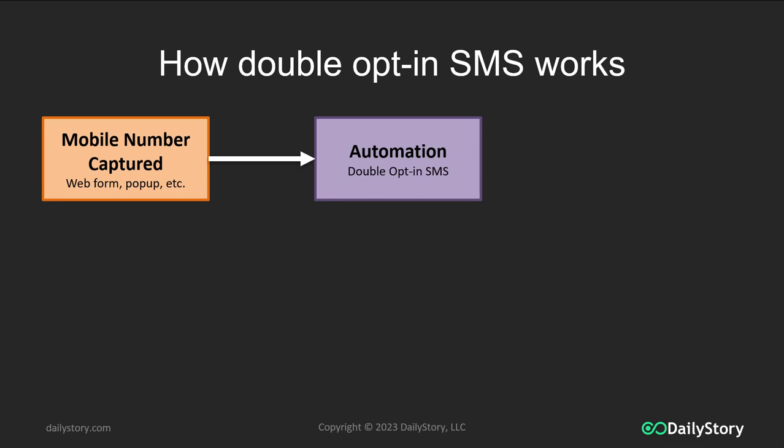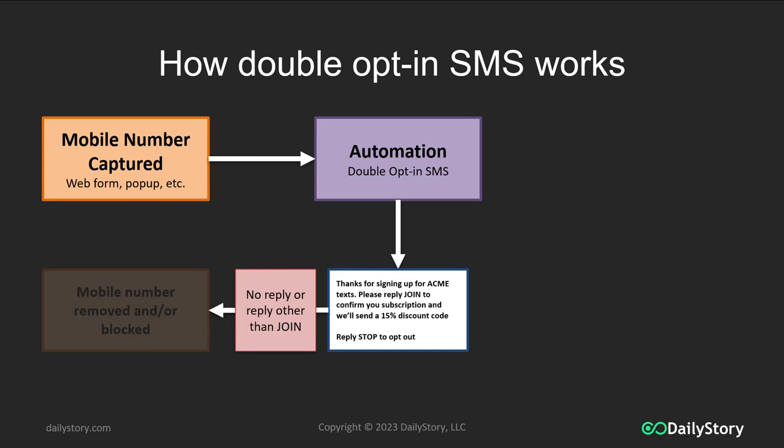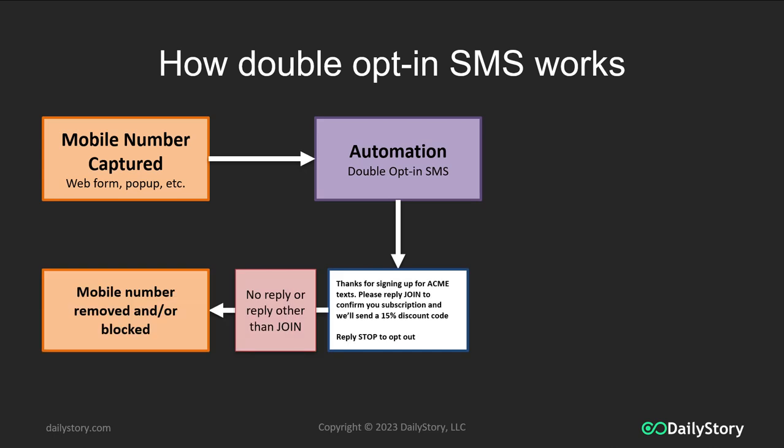What's going to happen is that number comes into your system. The automation runs — such as an automation in Daily Story — and that automation makes a number of determinations.